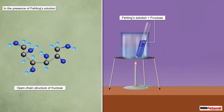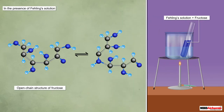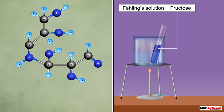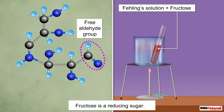Interestingly, under the conditions of reaction with Fehling's solution, the open chain structure of fructose isomerizes to the open chain structure of glucose. This way fructose has a free aldehyde group in its solution phase and is a reducing sugar.